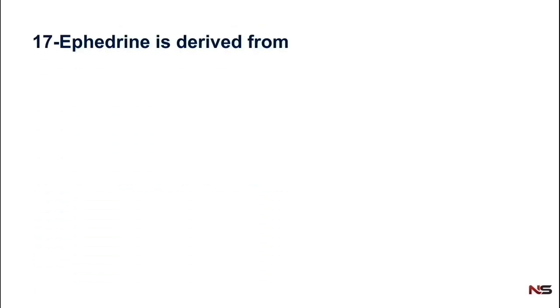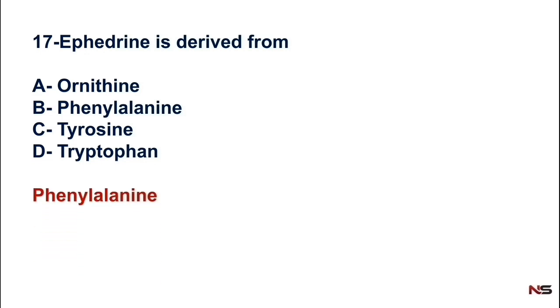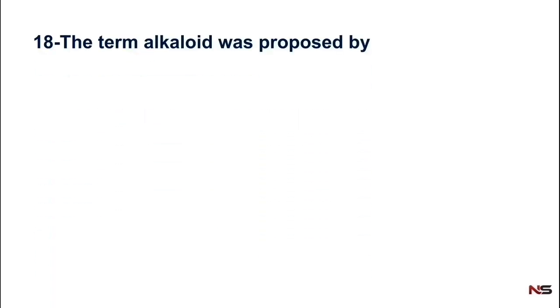Next question: Ephedra is derived from which precursor? Options are: option A - Ornithine, option B - Phenylalanine, option C - Tyrosine, and option D - Tryptophan. The correct answer is option B, phenylalanine. Ephedra is derived from phenylalanine.